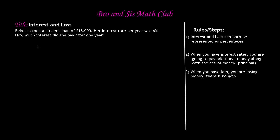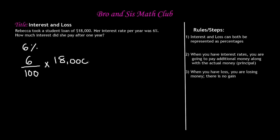Her interest rate per year was six percent. We learned in our previous video that a percent is part of 100, so six percent can be written as a fraction — six out of one hundred. And since she took a loan of eighteen thousand dollars, that means we calculate six over one hundred times eighteen thousand.